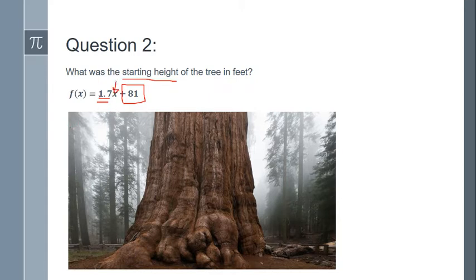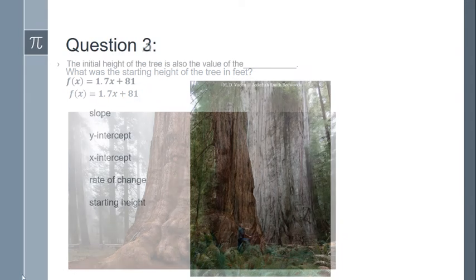Do you see how that works? Because right here, if I replaced x with 0, 0 times anything is 0, then we would get the output of 0 plus 81 or just 81. So that's what we mean by the starting height or the initial height. Just 81. So I can tell that just by looking at the function. Again, no work to do. 1.7, there's our rate of change. 81, that's our starting height. Just from the equation.